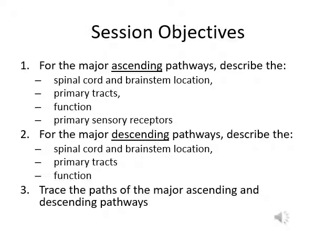In the last lecture, we learned the external anatomy of the spinal cord and the brainstem, and we also learned the cross-section of the spinal cord. In this lecture, we will trace the whole ascending and descending pathways located inside the spinal cord and brainstem.